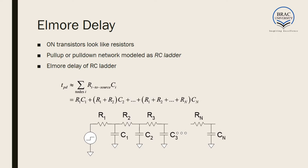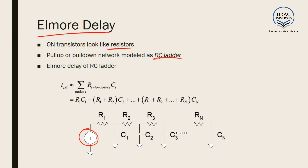In order to estimate the delay better, we have another model called the Elmore delay model, which also considers the transistors as resistors and capacitors — a combination of resistors and capacitors. The model follows an RC ladder.